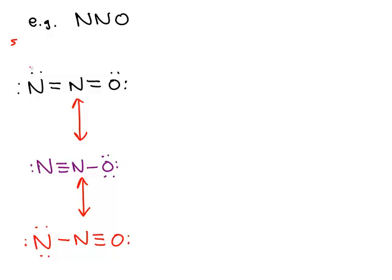And this leftmost nitrogen has four non-bonding electrons and it has a total of two bonds to it. So five minus four minus two gives you a value of negative one. So this nitrogen on the left has a negative one formal charge.